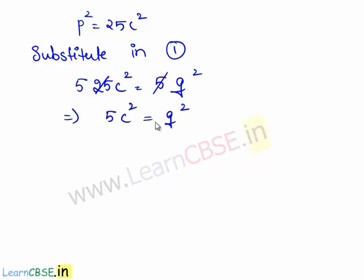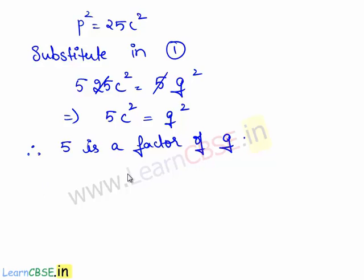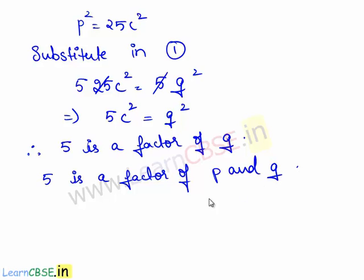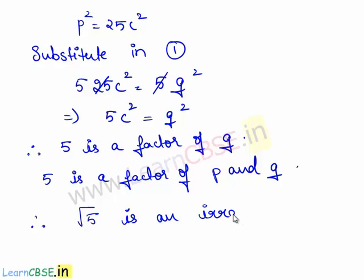From this equation, we have 5 divides q squared, which also implies that 5 divides q. Therefore, 5 is a factor of q. We have now obtained two statements, from which we can conclude that 5 is a factor of both p and q. This brings a contradiction to our assumption that p and q are co-primes. This is because of our wrong assumption that root 5 is a rational number. Therefore, root 5 is an irrational number.